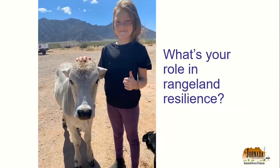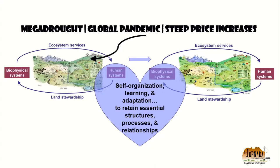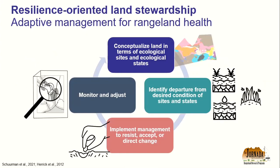Now that we know a little about resilience, what's your role in rangeland resilience? Going back to our model, I want to bring your attention to the role of land stewardship — a really important piece of the structure of the social ecological system and integral to all of the self-organization, learning, and adaptation in resilience processes. One major approach is adaptive management for rangeland health, where many of us work.